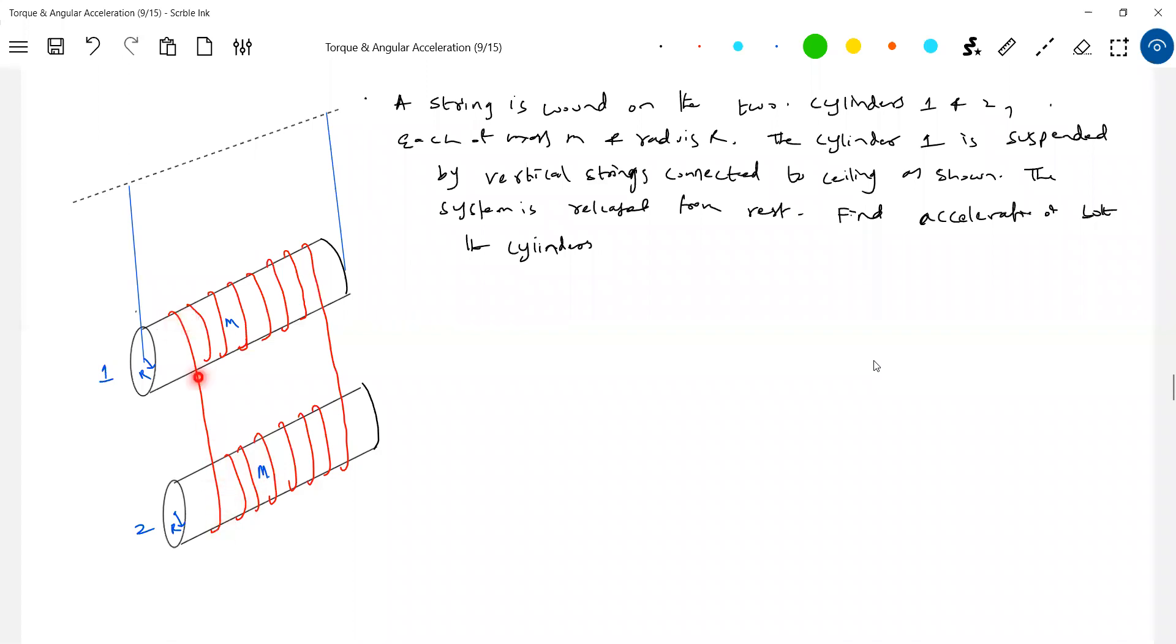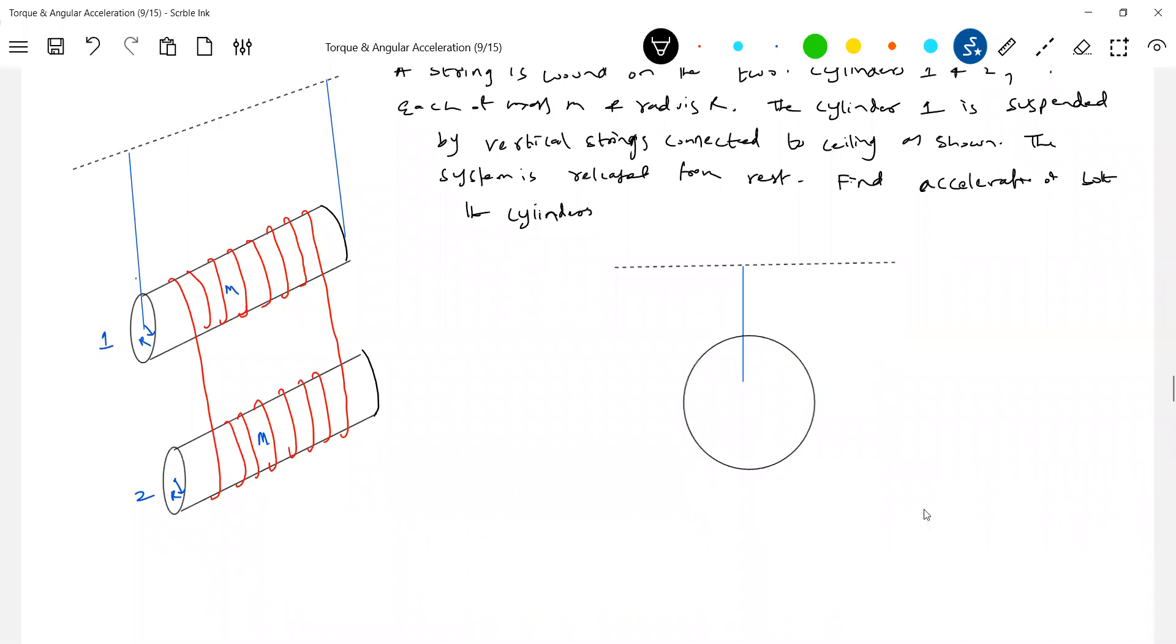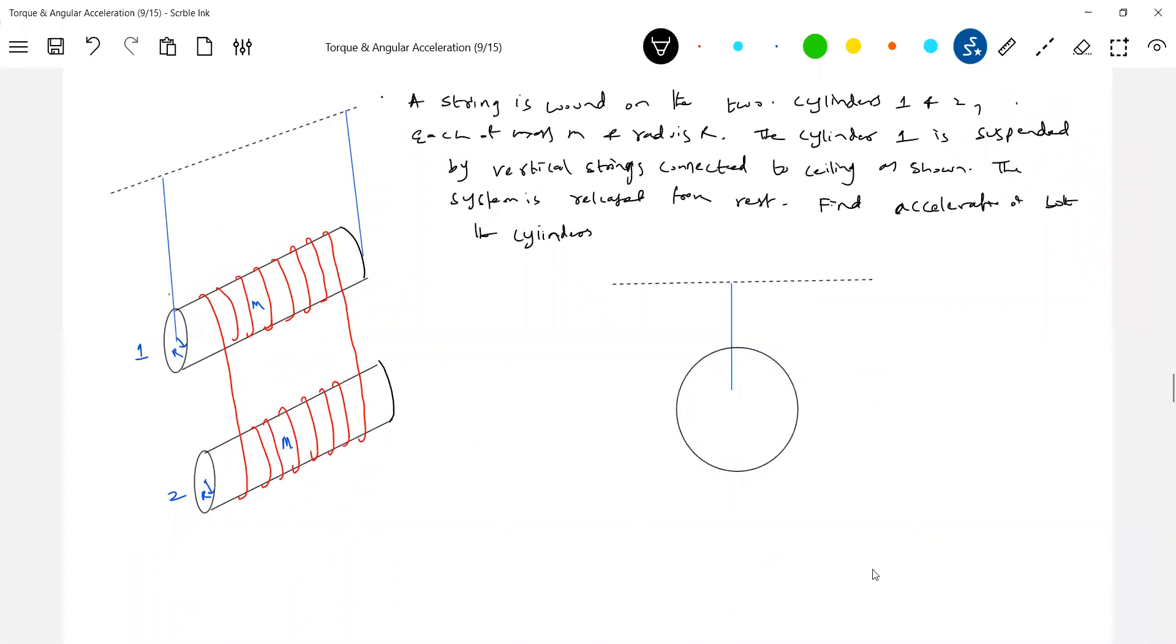The other string will be wrapped like this, then I'll pass it, then I'll put a knot here. So I do take two strings; one string is not possible to wrap like this. Okay, now convert this into a plane diagram. So there's a ceiling, there's a blue color string, and there's the first cylinder.